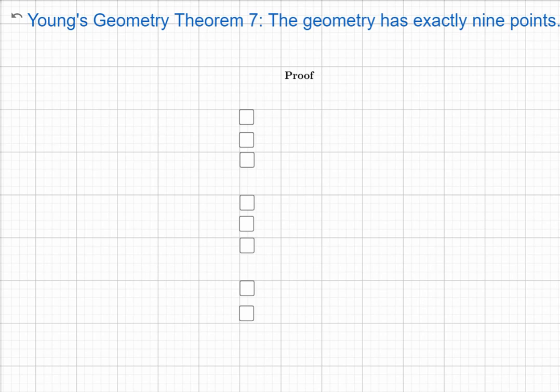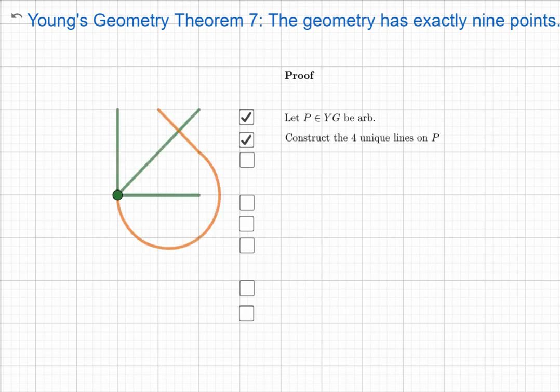We're going to prove Young's Geometry Theorem 7. The hard part of this proof was all done in Theorem 4, so you definitely want to check out the proof of Theorem 4 because all of the logic is already there. Our proof just starts with letting an arbitrary point exist — this should be Theorem 1 — we're allowed to pick up to four arbitrary points. We're going to use Theorem 4, and that will be fixed in the GeoGebra proof shared online.